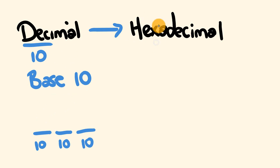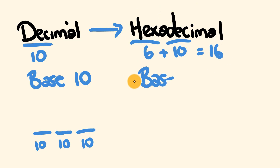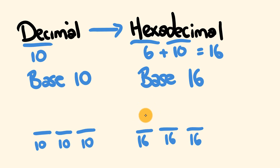Hexadecimal is a little different. 'Hex' stands for 6 and 'deci' stands for 10, so 6 plus 10 equals 16 — this is a base 16 numbering system. That means in each digit position we have 16 digits to choose from rather than 10, and that applies to every digit place and so on.